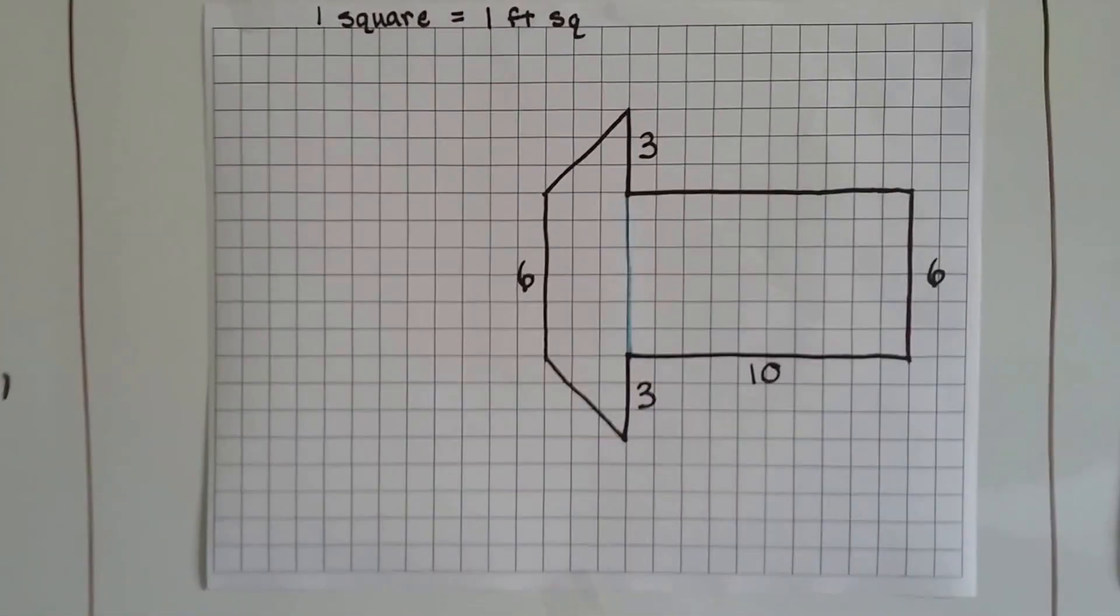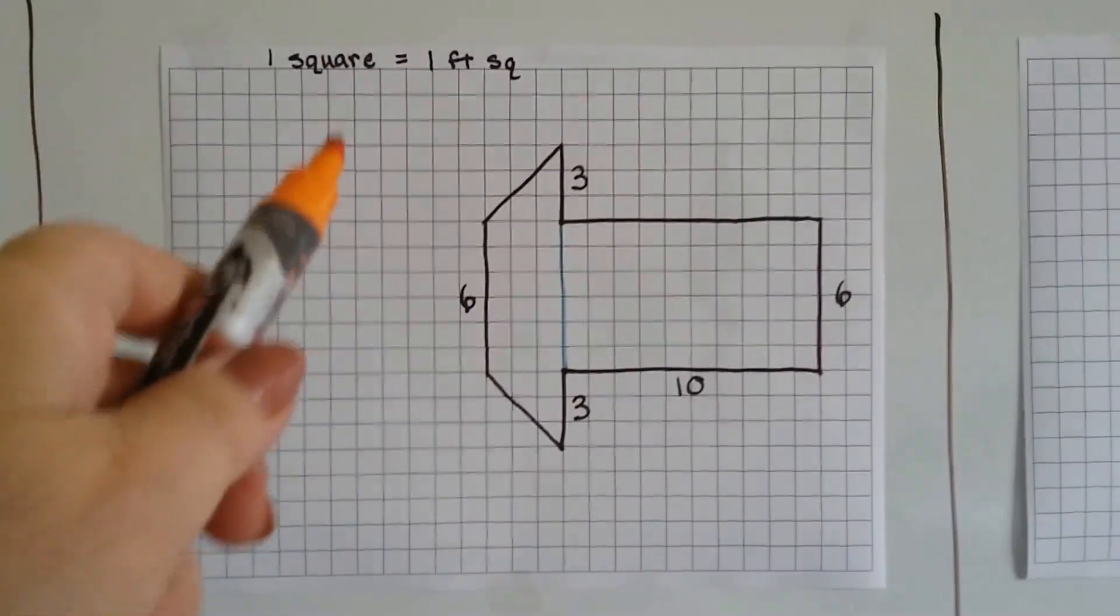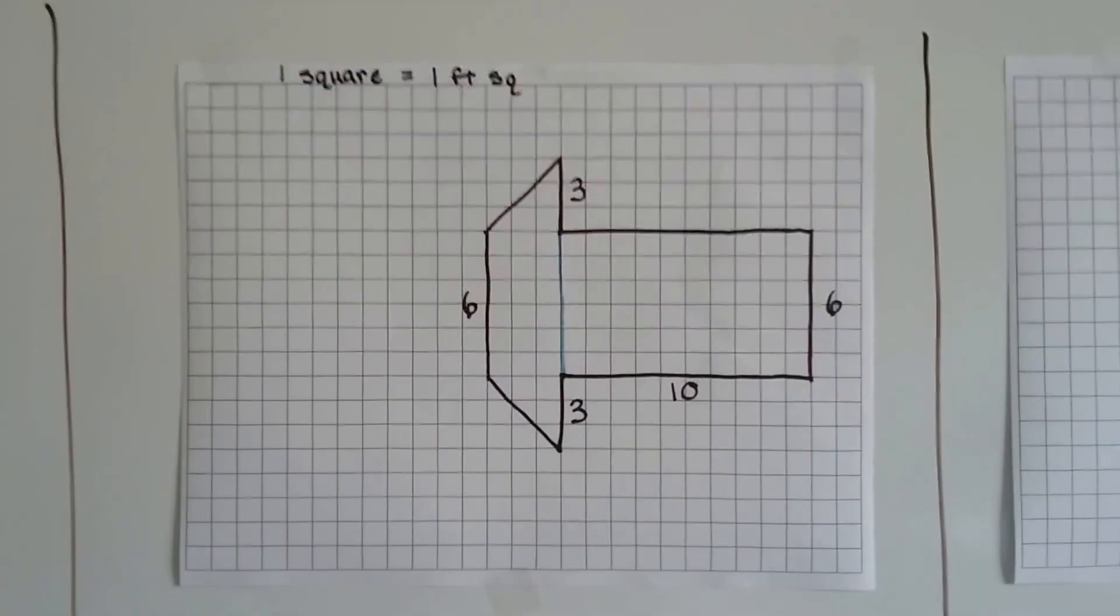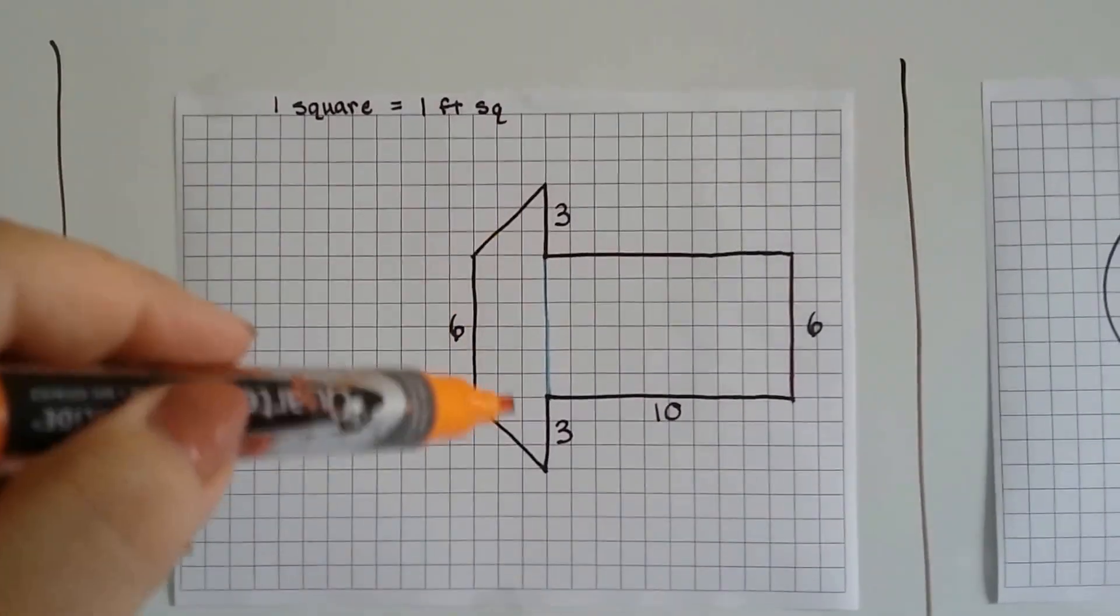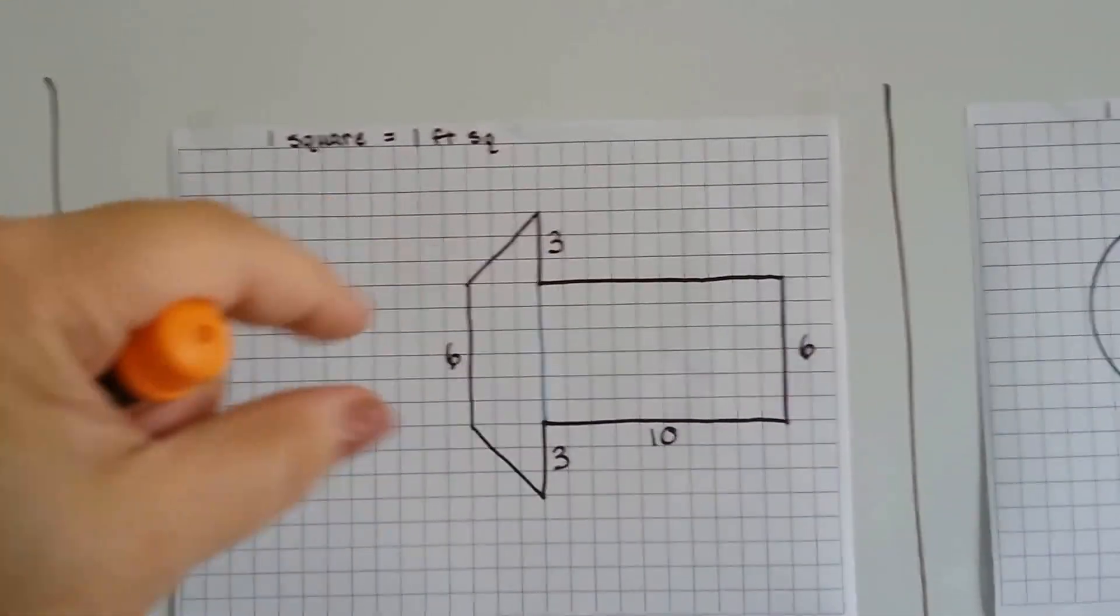Alright, so let's take a look at the first one. This one says that one square is equal to one foot squared. Right up here. It's got a little key. And it shows that we've got this shape. It's almost like an arrow, but the point has been cut off.